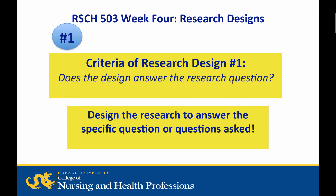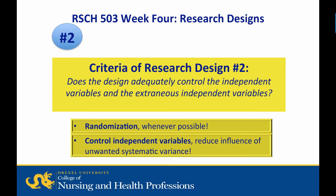With the previous information provided, we can now review the criteria for research design. First, does a design chosen answer the research question? The design must effectively answer the specific research question or questions asked. Second, does a design adequately control the independent variable or variables and the extraneous independent variable or variables? The two methods to address this are: first, randomization if possible, and second, control of independent variables to reduce the influence of unwanted systematic variance.